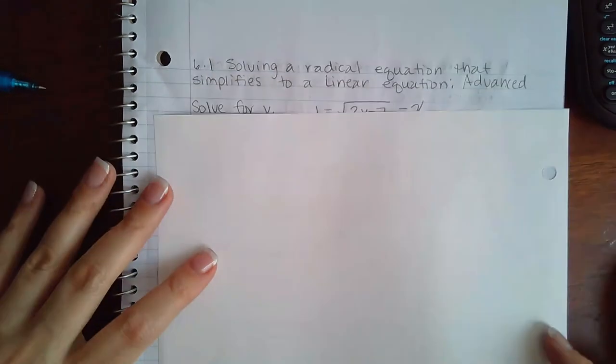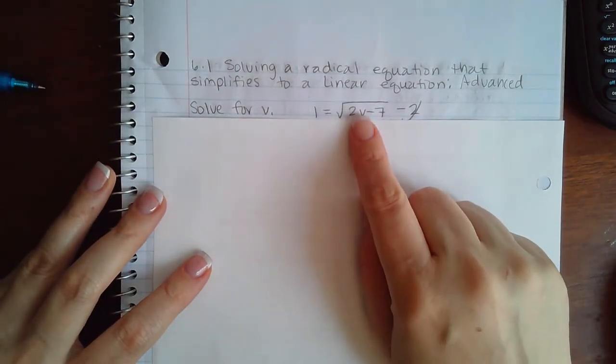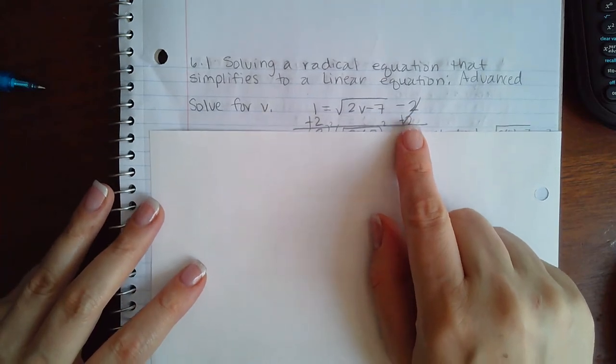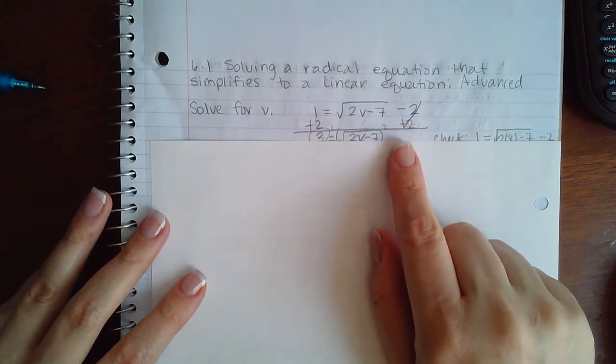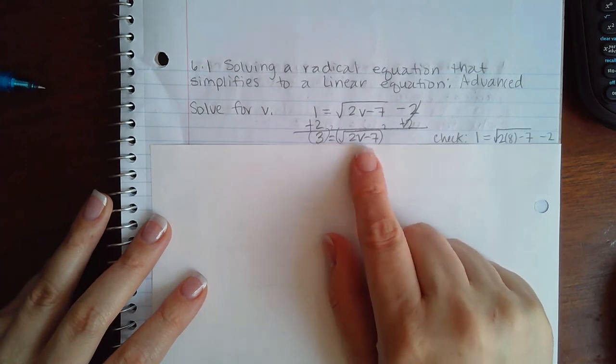If I take this here and I want to isolate my radical, that means I'm going to have to move this 2 over. So I added 2 to both sides to get rid of this 2, leaving me with 3 on the left-hand side and then the square root of 2v minus 7 on the right.